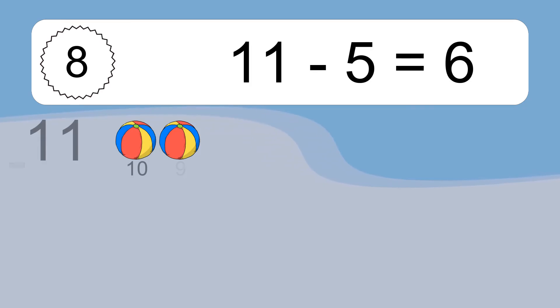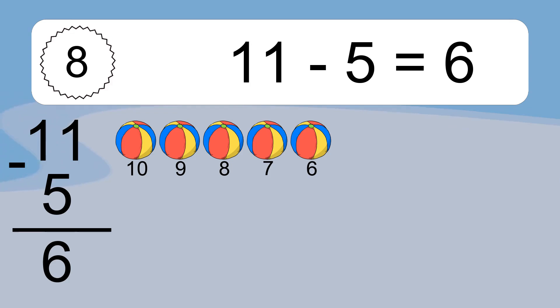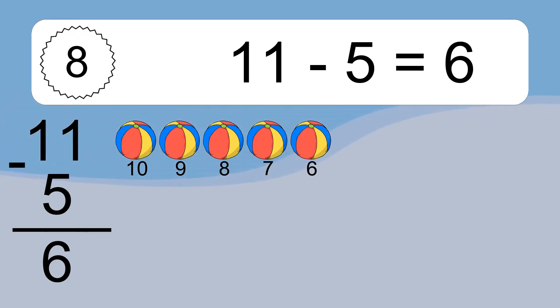11 minus 5 equals what? 11 minus 5 equals 6. Let's count it! 10, 9, 8, 7, 6.